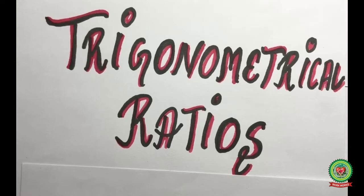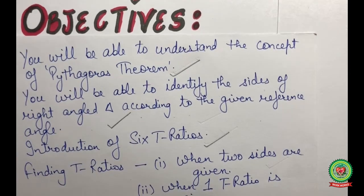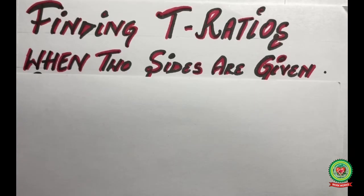Hello students, welcome back for another video on the topic trigonometrical ratios. In our previous video we have discussed about the six trig ratios — sin theta, cos theta, tan theta, cosecant theta, secant theta, and cotangent theta. Now we are going to discuss how to find trig ratios when two sides are given to us.